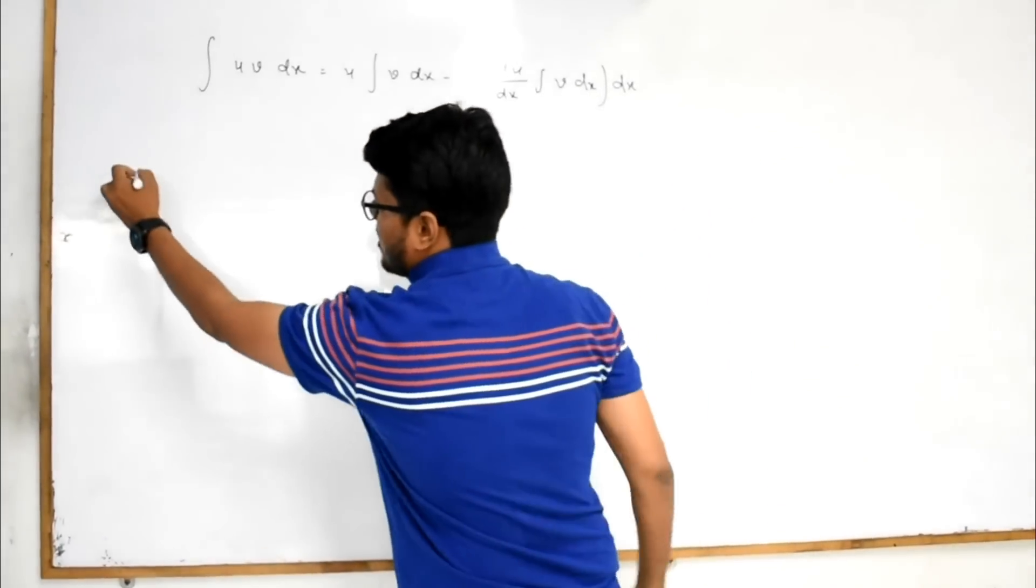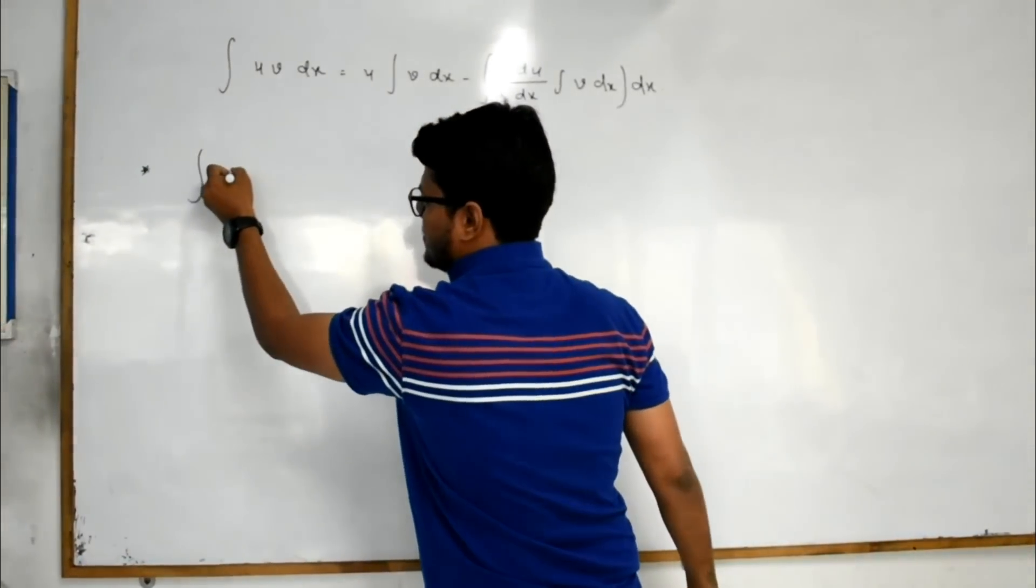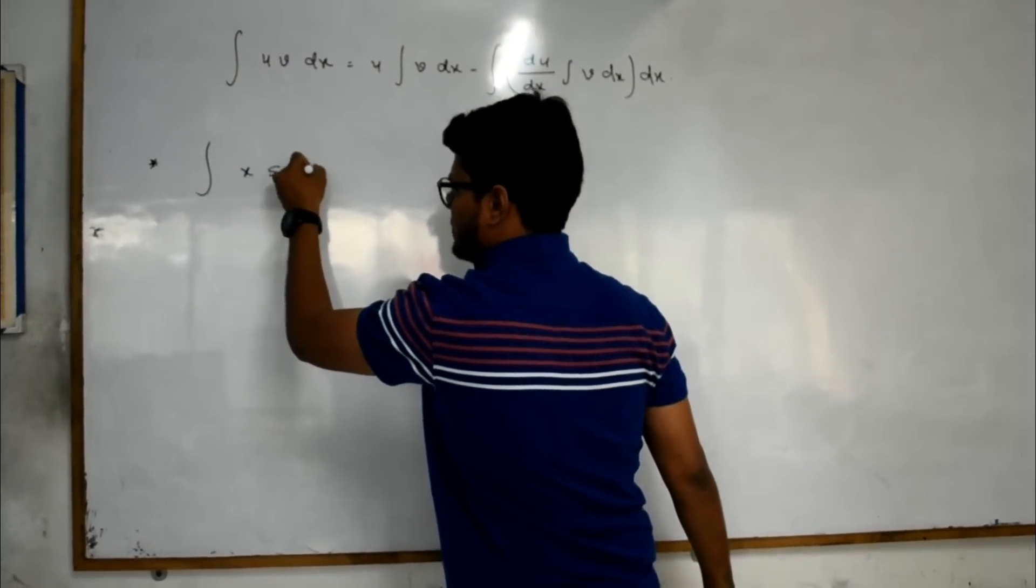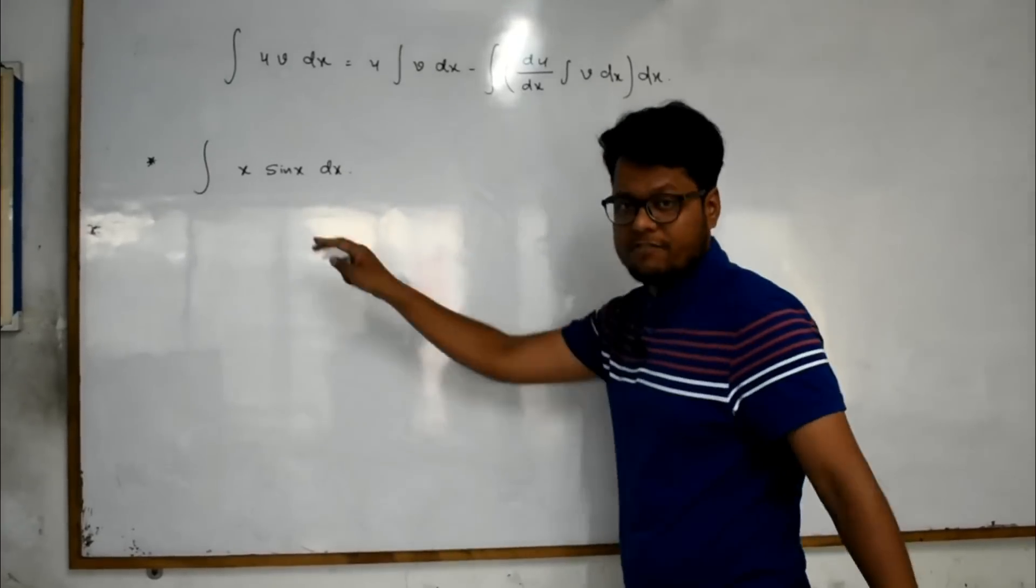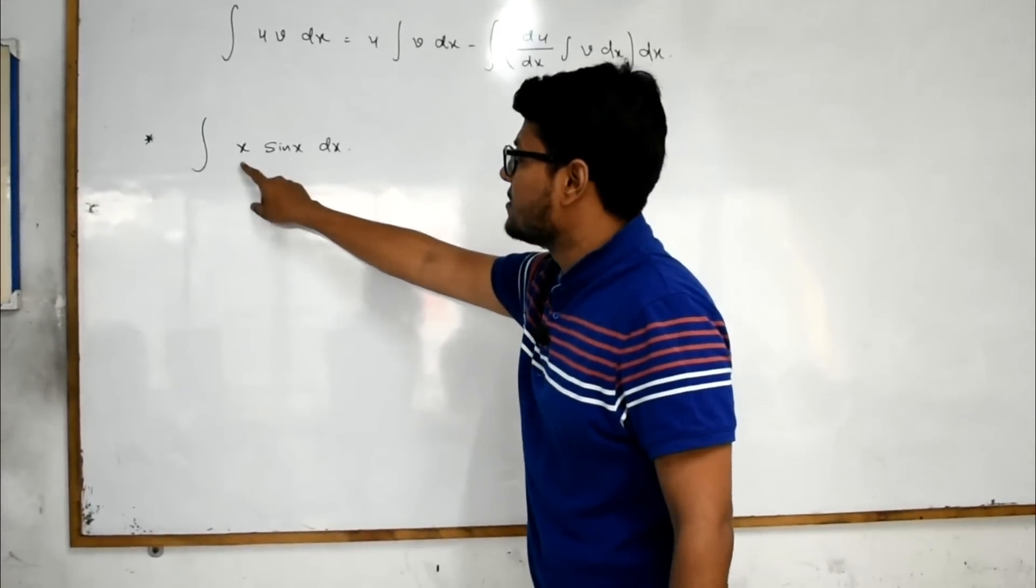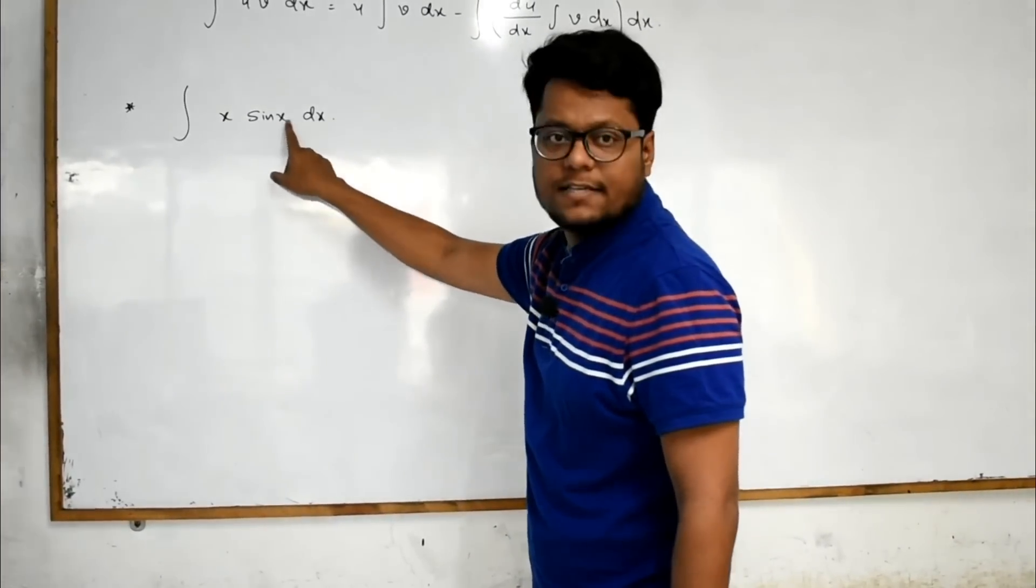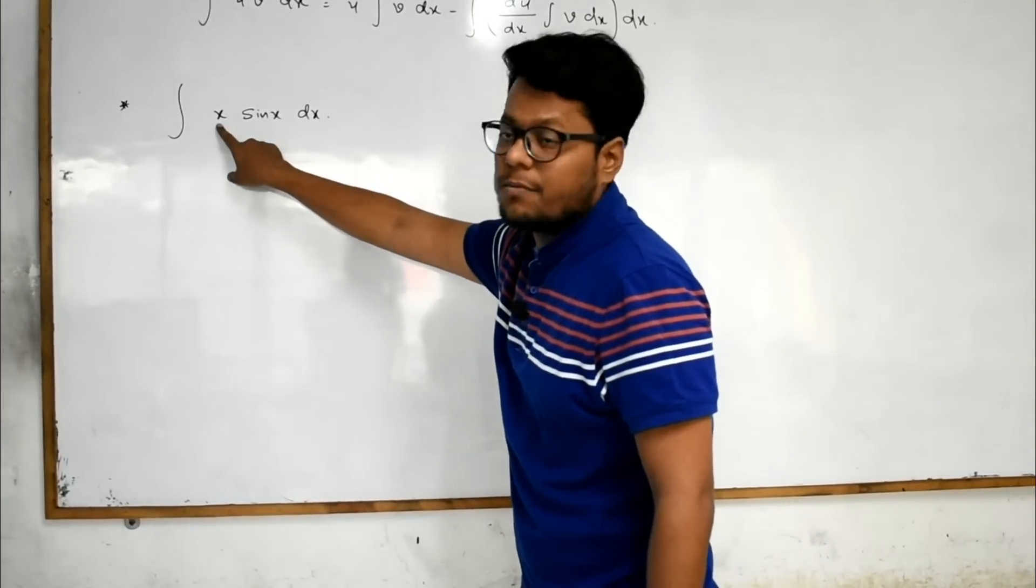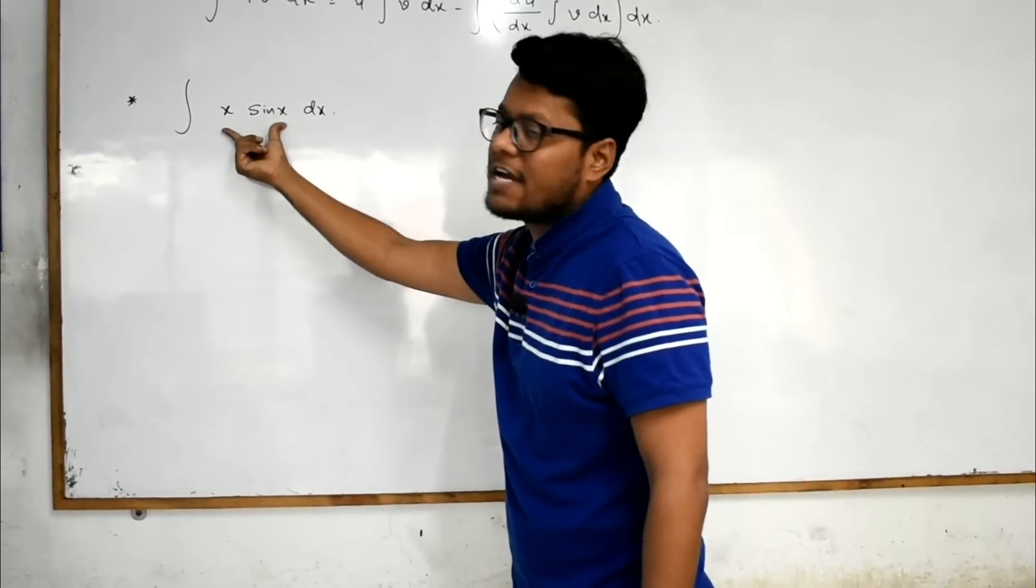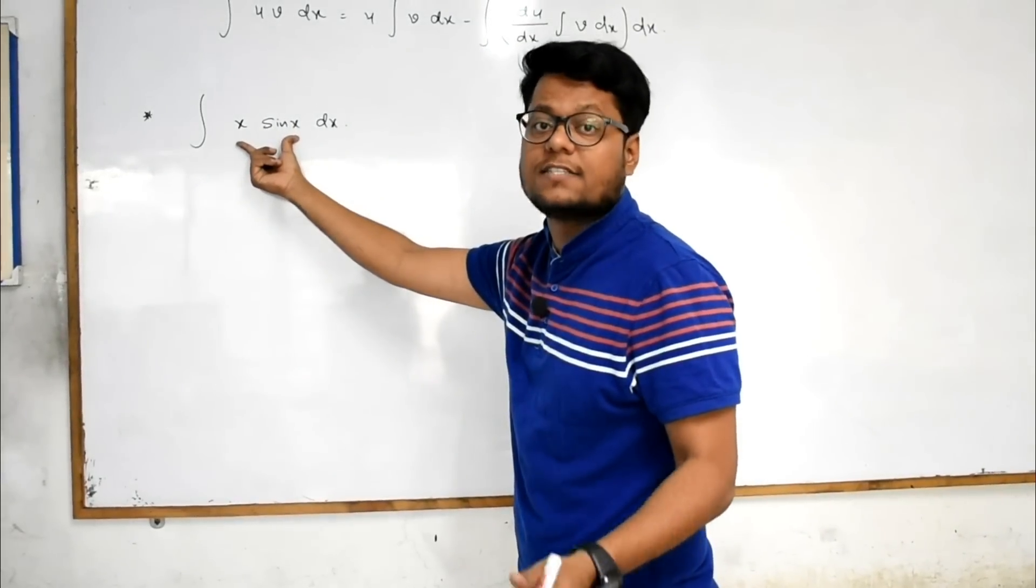Now if we have a criteria like this: x into sin x dx. The sum is integration x into sin x dx. Now x is one term and sin x is one term, but they are in a multiplication so considered as a single term.